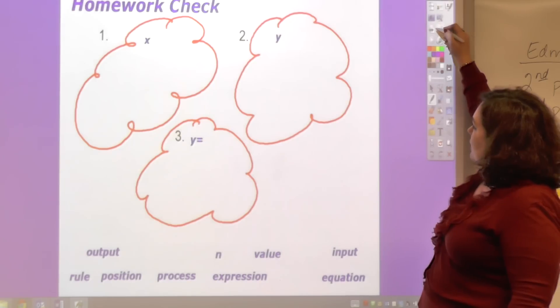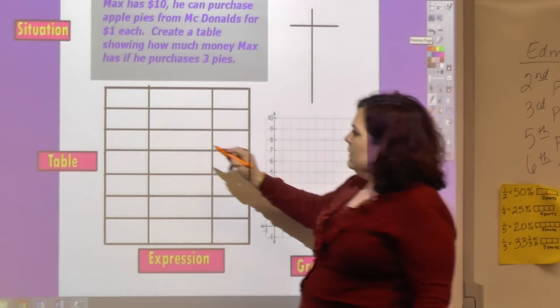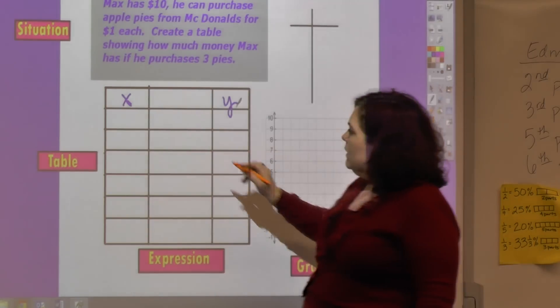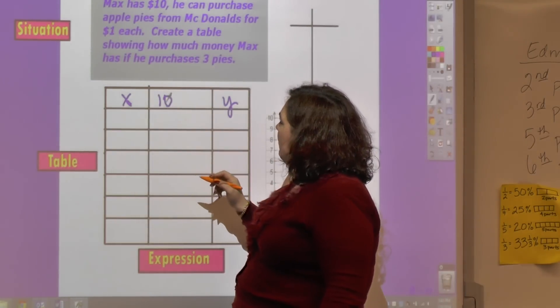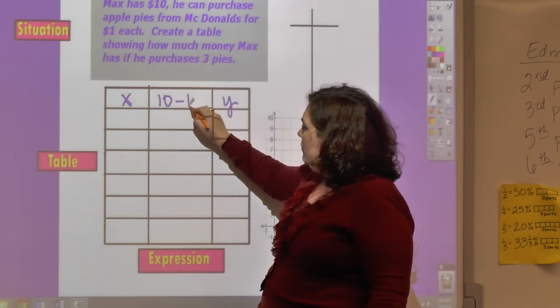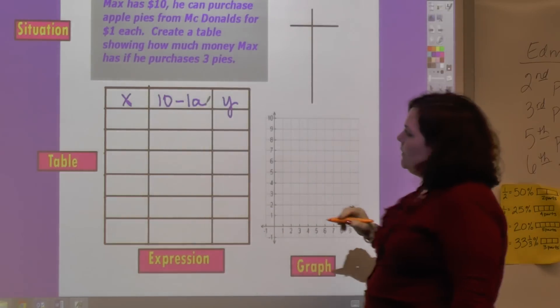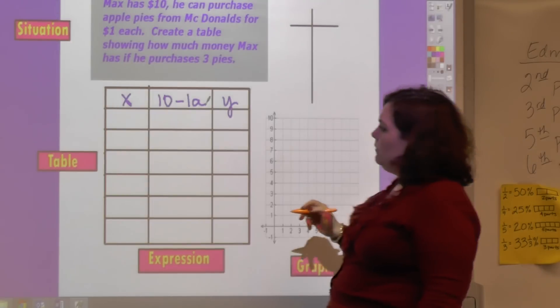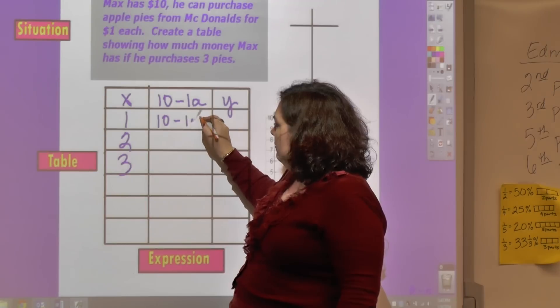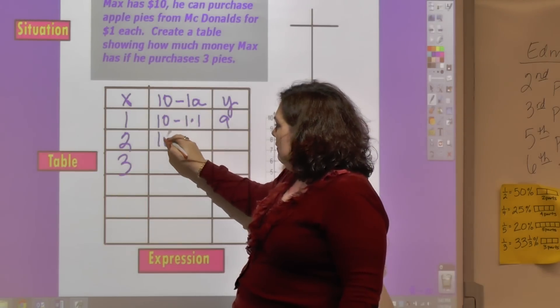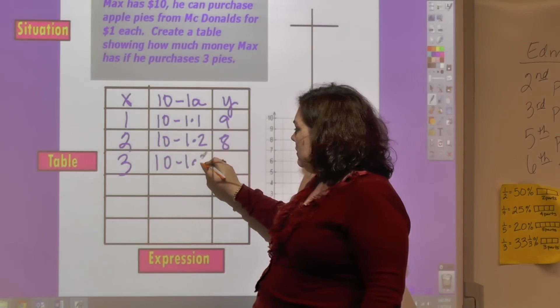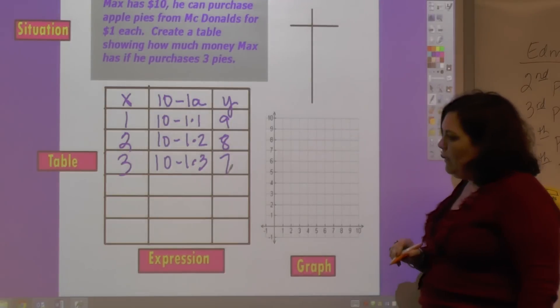This is the last one we'll do. This is X and this is Y. It says Max has $10 and he can purchase apple pies from McDonald's for a dollar each. So $1 per apple pie. Create a table showing how much money Max has if he purchases three pies. So if he purchases one, two, three pies, it would be 10 minus one times one, which is nine. 10 minus one times two, which is eight. 10 minus one times three, which is seven. And that's how much money he would have.